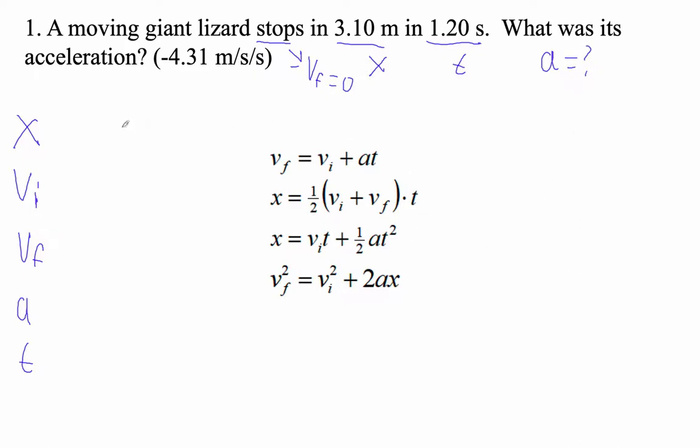So let's write down what we know. Our final velocity is zero because it stops. 3.1 meters is our distance. Our time is 1.2 seconds. And now we have three things. You have to have three things to solve this.